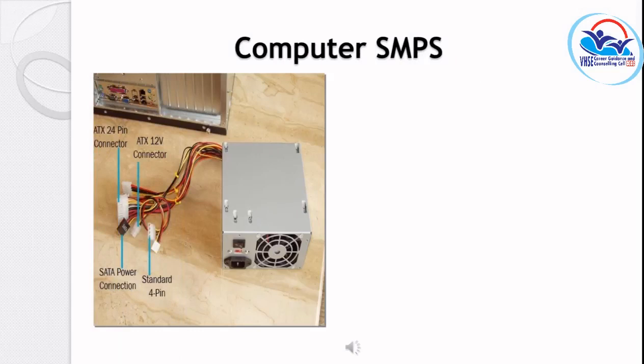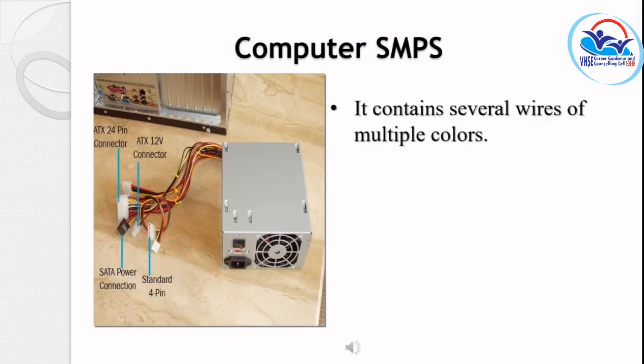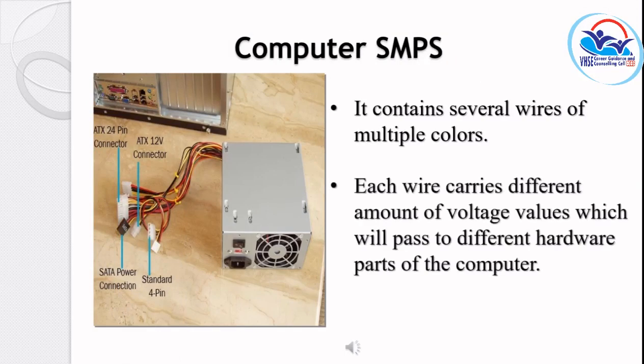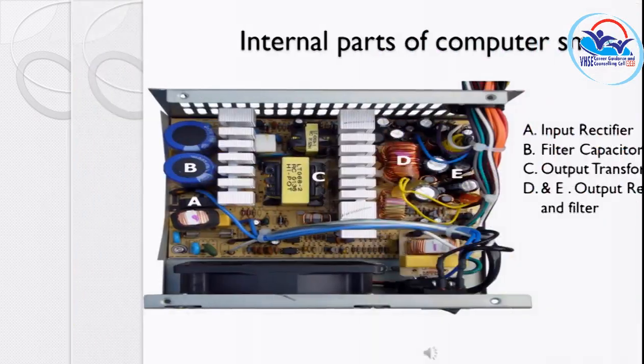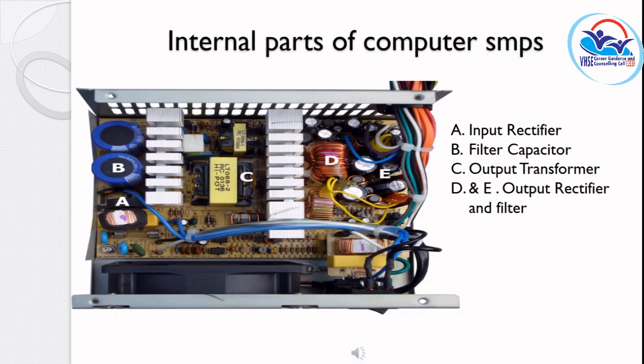The internal sections of the SMPS are labeled as A, B, C, D, and E. A is the input rectifier, B is the filter capacitor, C is the output transformer, D and E are the output rectifier and filter.